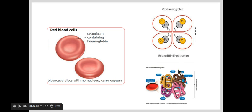This picture shows the more complex three-dimensional structure of the hemoglobin molecule. The four polypeptide chains are shown in yellow, brown, pink, and purple. The little red dots on the blue structure are the heme groups attached to each of the four polypeptide chains.